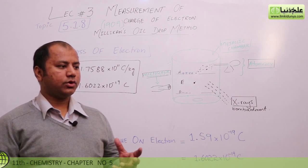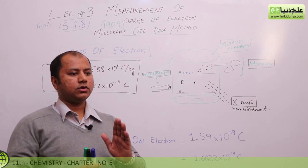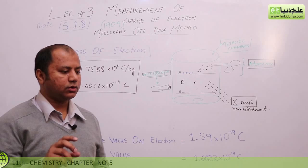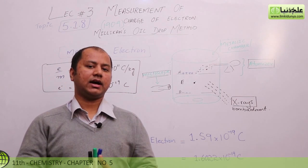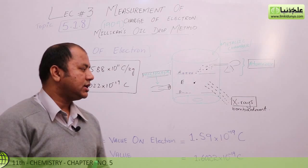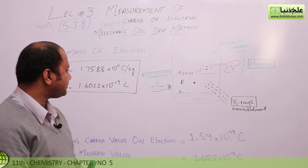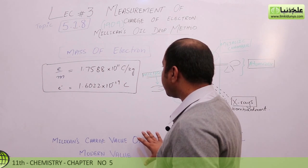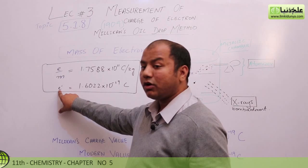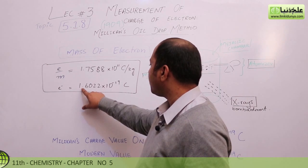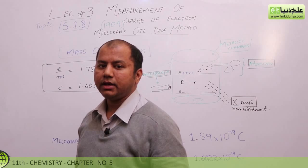As I told you, Millikan performed his experiment and concluded the charge value on a small droplet. Now from this experiment and the previous experiment — from the previous lectures — JJ Thomson determined the charge-to-mass ratio using his discharge tube experiment, which was 1.7588 × 10¹¹ coulomb per kg.